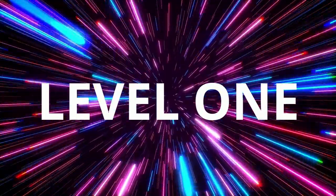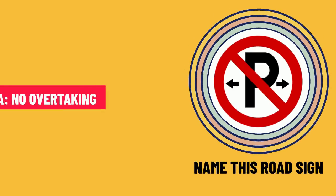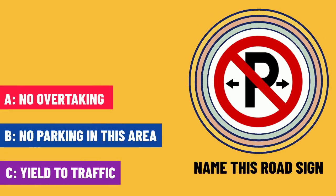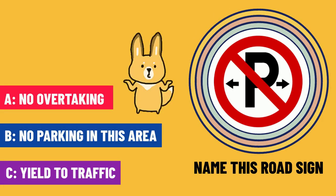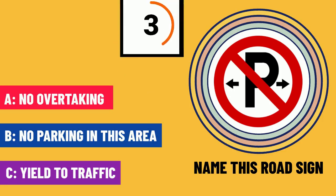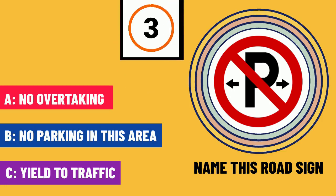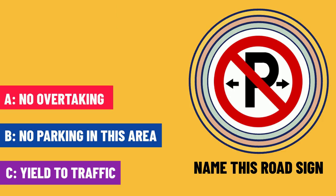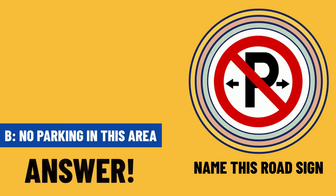Level 1. Question 1 — name this road sign. Your options are A, B and C. Take a moment to consider your answer. The correct answer is B — no parking in this area.